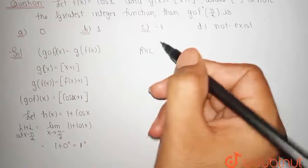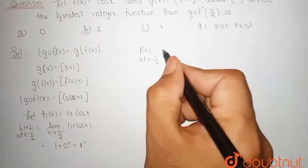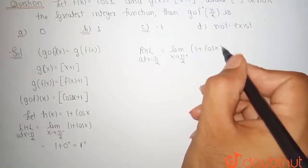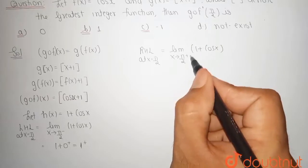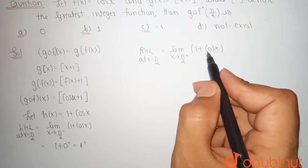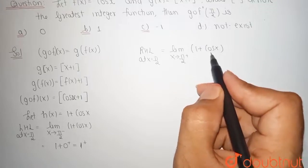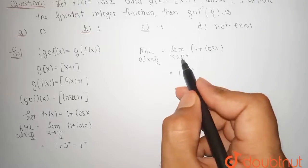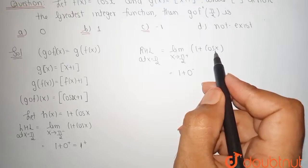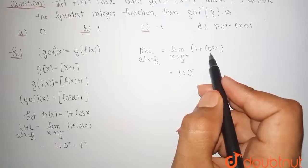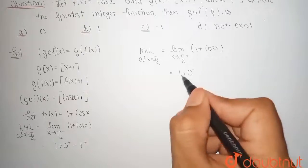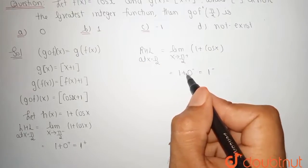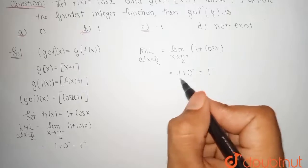Now we determine the right-hand limit at x = π/2, which is: limit as x tends to π/2 plus of 1 + cos(x). Note that if x is slightly greater than π/2, then cos(x) is negative but very close to 0, written as 0−. So 1 + 0− is slightly less than 1, and this whole value becomes less than 1.